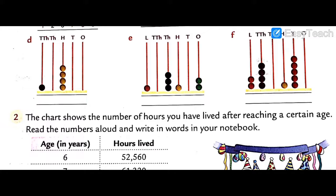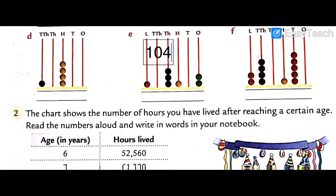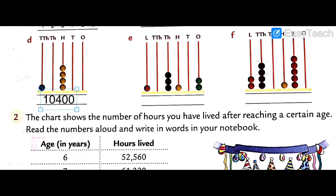Question Number D. In the ten thousand place there is one digit. Thousands is zero. Hundreds has four digits — meaning four hundred. Tens is zero. Ones is zero. So the answer is ten thousand four hundred. Write in words: ten thousand four hundred.